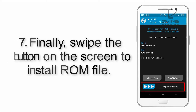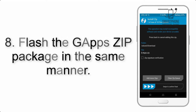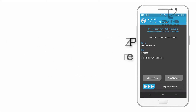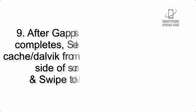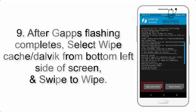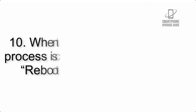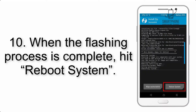Step 7: Swipe the button on the screen to install the ROM file. Step 8: Flash the GApps zip package in the same manner. Step 9: After GApps flashing completes, select Wipe Cache and Dalvik from the bottom left side of the screen and swipe to wipe.